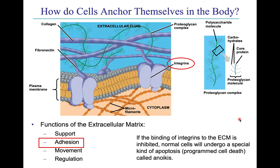In the human body, normal cells are anchored to extracellular matrix — a mixture of proteins and glycoproteins such as collagen and fibronectin outside the cells. Cancer cells, on the other hand, are happy dividing anywhere, even in the bloodstream. This is one of the characteristics that allows cancer cells to metastasize, because a normal cell in the bloodstream won't divide and will probably die, whereas cancer cells are perfectly happy to keep dividing there.